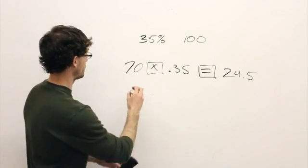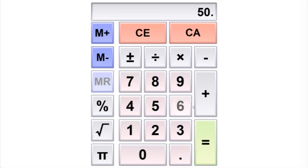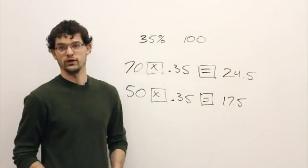Say, again, maybe we do 50, hit the multiply button, times 0.35 again, and hit equals. We want to know what that's going to be. It'll be 17.5. And this is how you find percentages on your calculator.